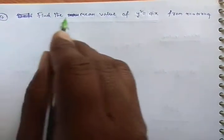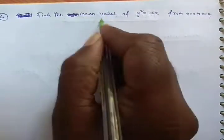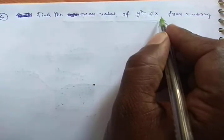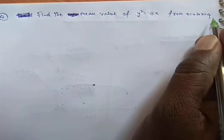Let us take this as the first problem. Find the mean value of y² = 4x from x = 0 to x = 4.